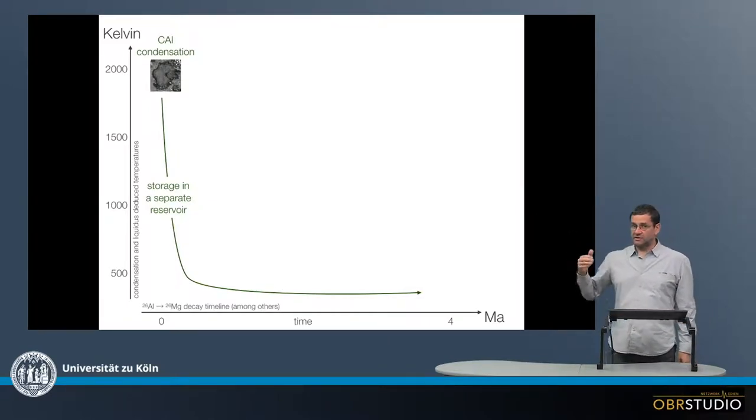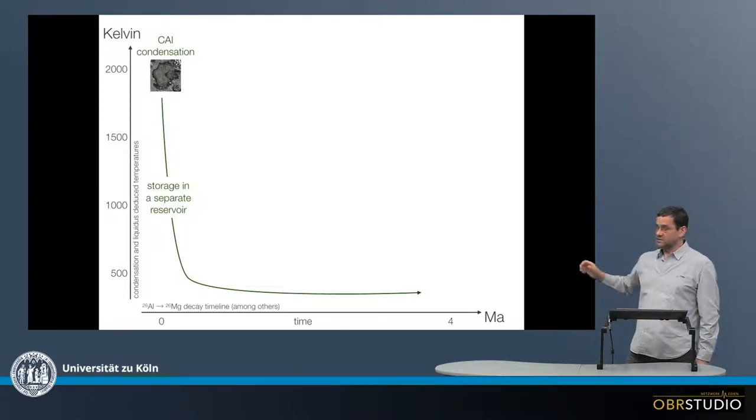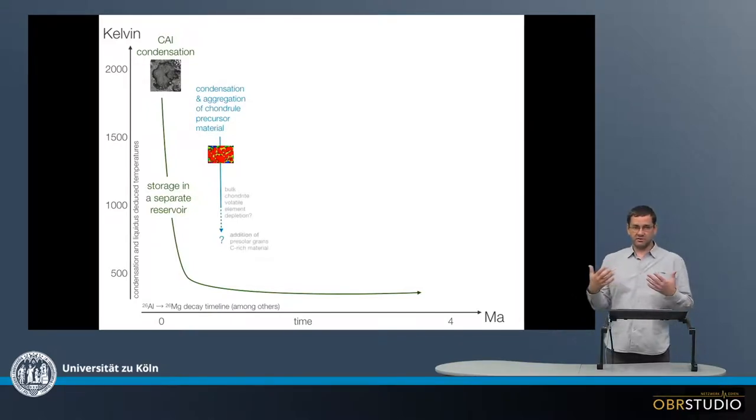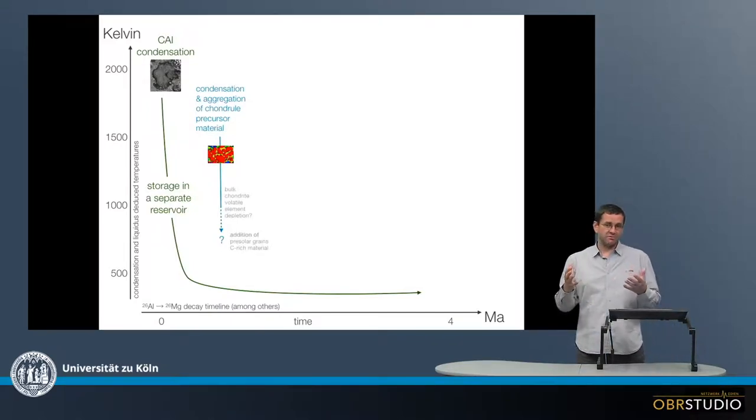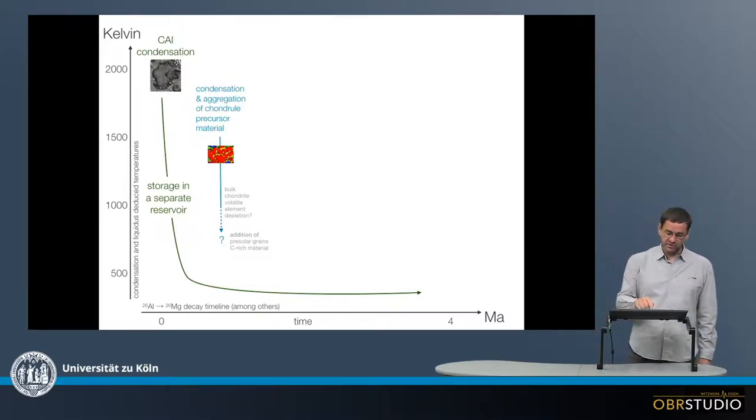The CAIs are likely xenoliths in most of the chondrites and were therefore likely stored in a separate reservoir and later incorporated into the chondrite parent bodies. The condensation might have also destroyed the initial parts of the interstellar material, and then from the gas, this is then recondensed as the high temperature materials such as olivine. So this is what happened here in this second step, condensation aggregation of the chondral precursor aggregates.